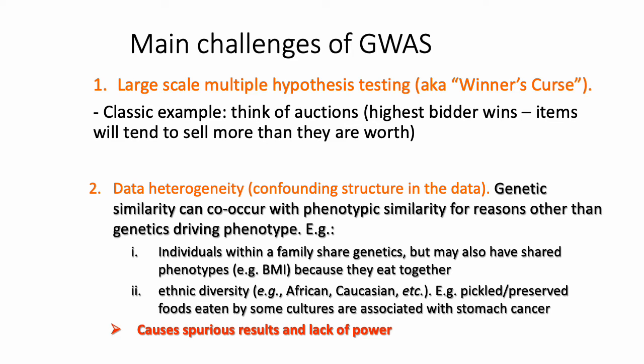Genetic association studies face several challenges. The first is what's known as winner's curse. When you perform a GWAS, you repeat the line-fitting test on a large scale — typically testing 600,000 to 10 million SNPs — and then rank them by p-value or effect size, looking at the SNPs with the smallest p-values or largest estimated effects.